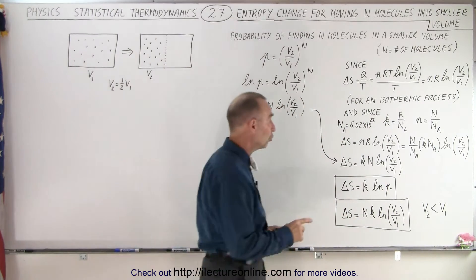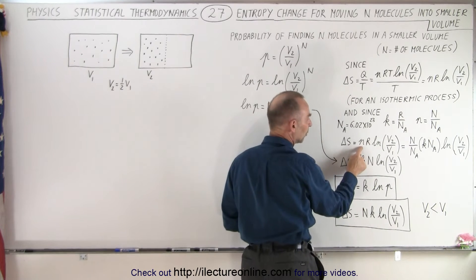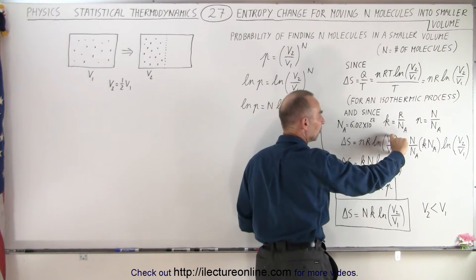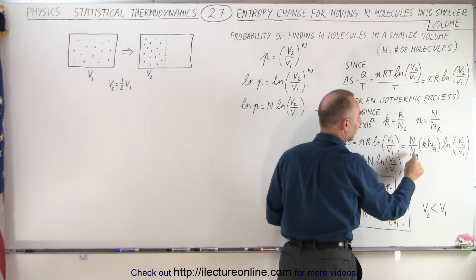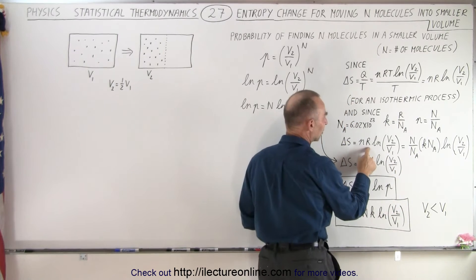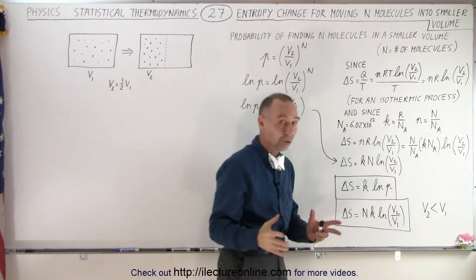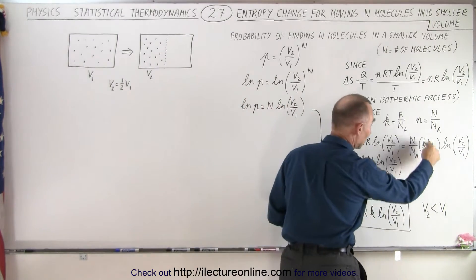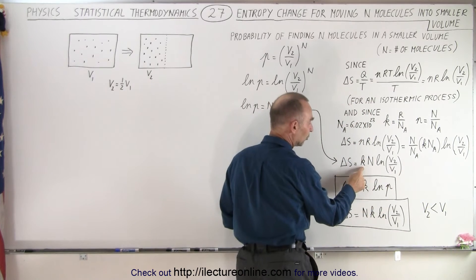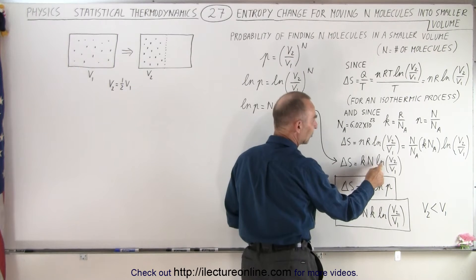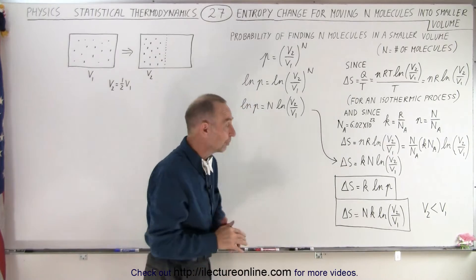Making a few substitutions: the change in entropy equals the number of moles times the gas constant times the natural log of the ratio of the volumes. We replace the number of moles with the number of molecules divided by Avogadro's number, and exchange the gas constant for Boltzmann's constant times Avogadro's number. Avogadro's number cancels out, leaving ΔS = k_B · N · ln(V2/V1) — Boltzmann's constant times the number of molecules times the natural log of the final volume over the initial volume.